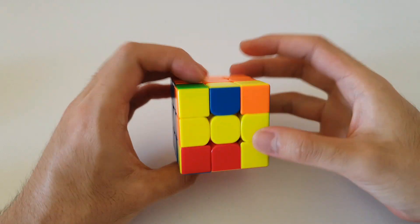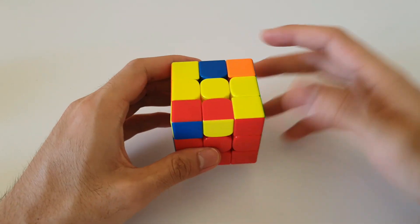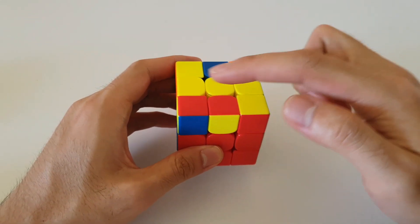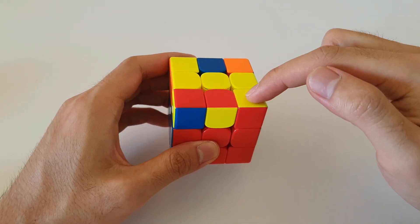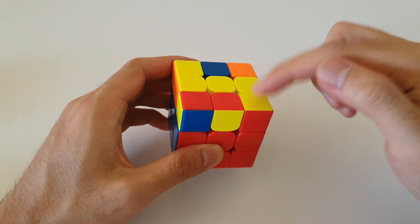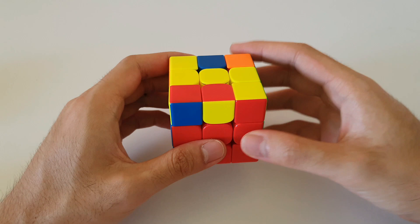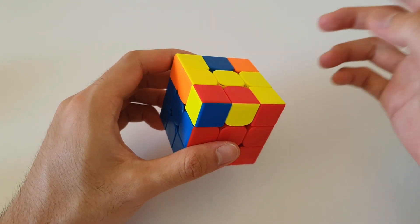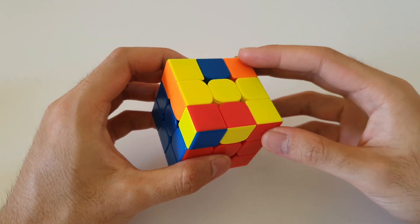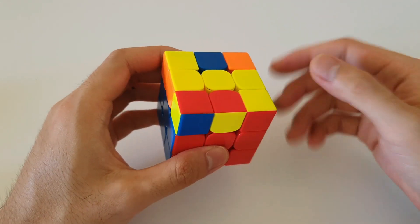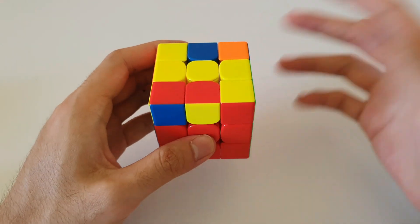Now that you've placed the 2x1 bar at the back, you want to look at the front corner colors. If the corner on the right side is yellow, it means that it is the right-handed case and you can go ahead and do the right-handed algorithm. The algorithm for this case is actually quite straightforward and it is also quite easy to remember.